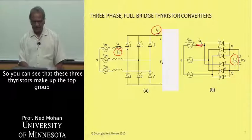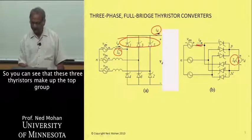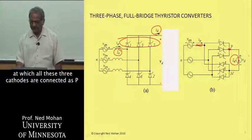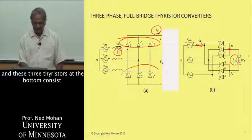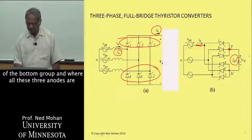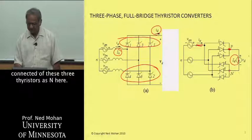These three thyristors make up the top group and we will call the point at which all these three cathodes are connected as P. These three thyristors in the bottom consist of the bottom group and where all these three anodes are connected of these three thyristors as N. So V sub D is equal to VPN minus VNN.